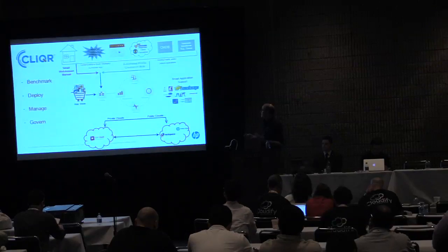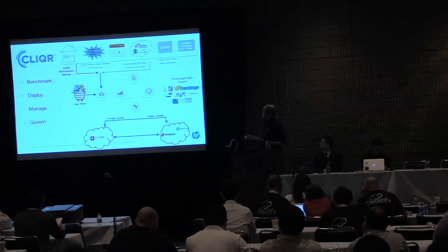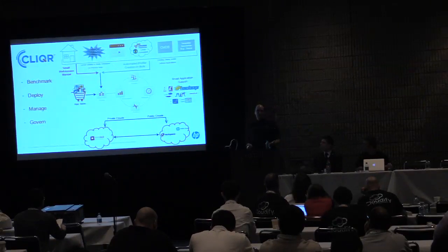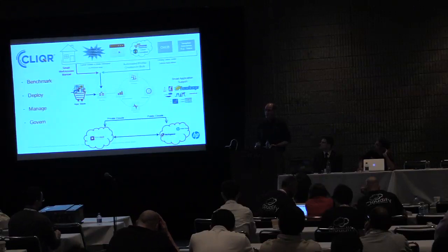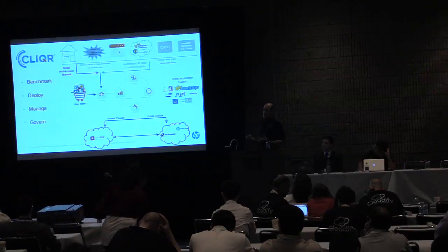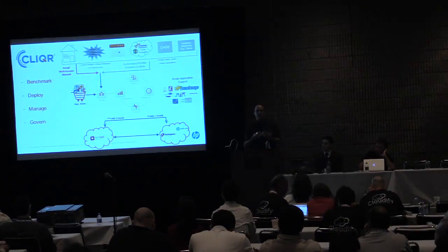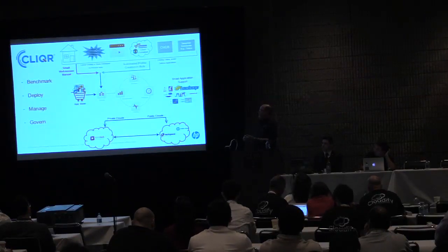The key to our approach is what we call profiling — others call it templating. Whether you have a couple of small applications or many, the average Fortune 500 company has 5,000 applications they're trying to manage at any one time. Sometimes those are legacy applications you don't know anything about, so you have to do image snapshotting, a kind of lift and shift. Regardless of how you do that, you create what we call an application profile — a cloud-agnostic description of the infrastructure needs of that application.